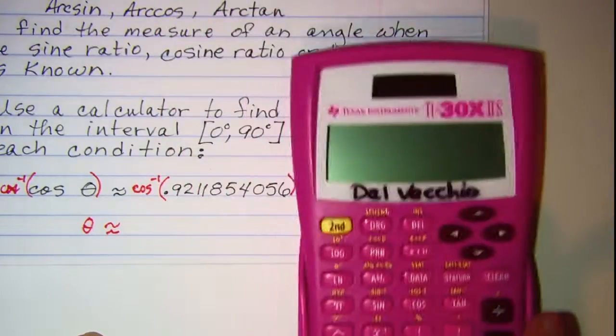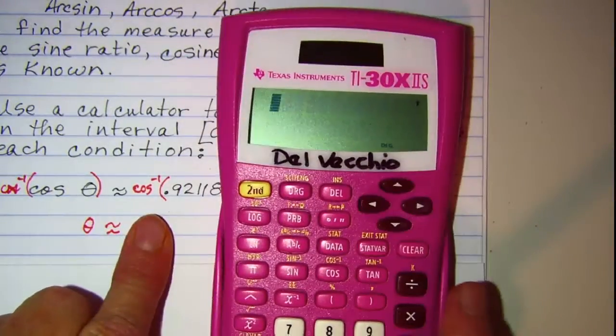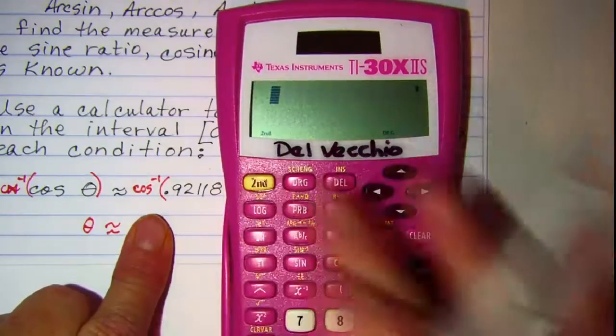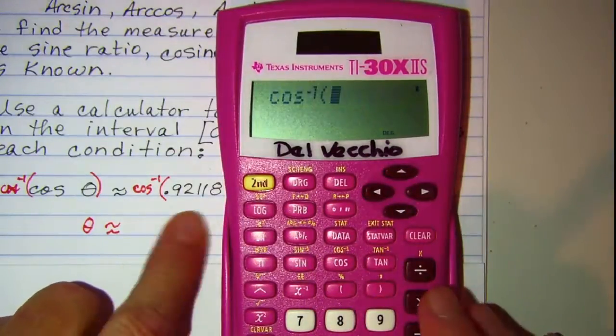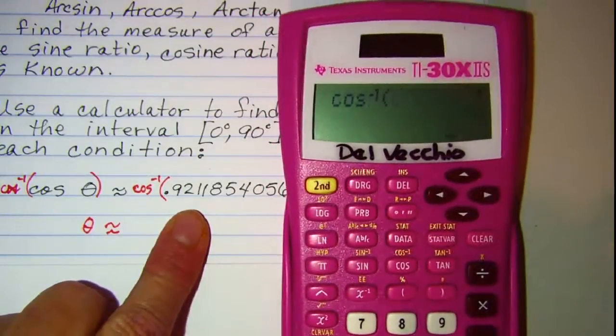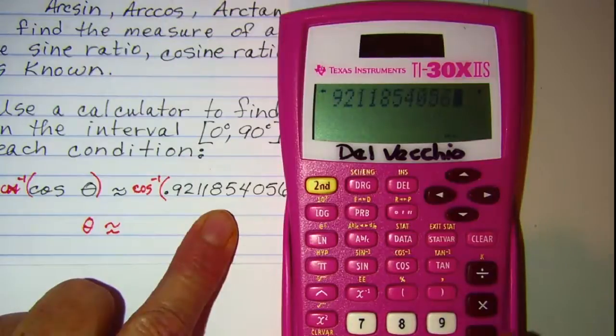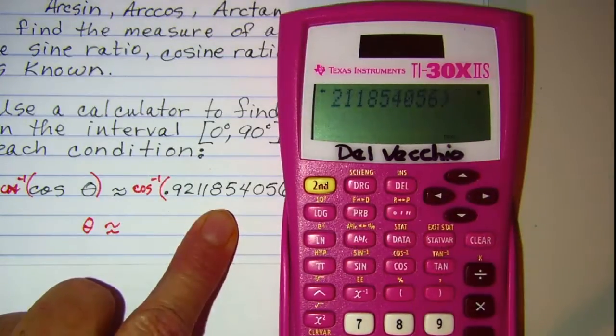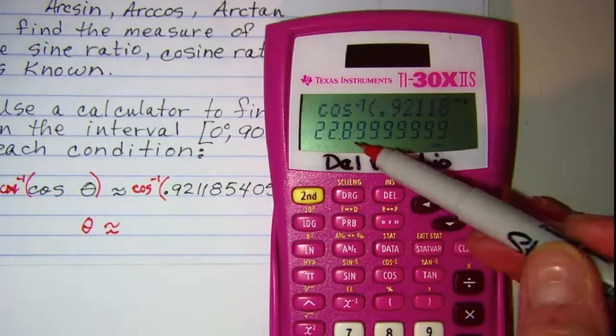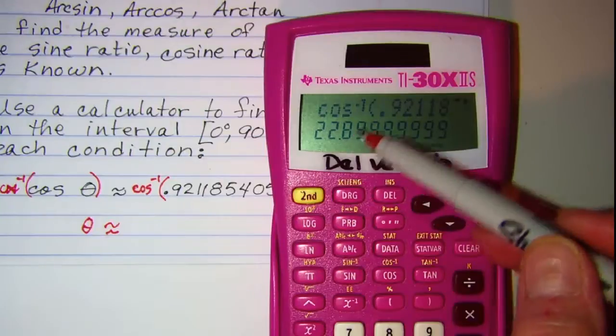And then to do our problem, we just hit second cosine, and then the cosine ratio, which is 0.9211854056. Close the argument and hit ENTER. So I would write this as 22.9 degrees.